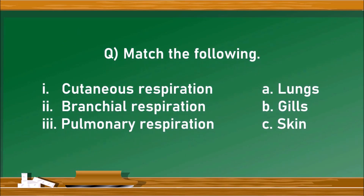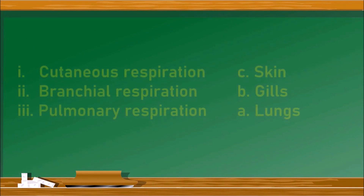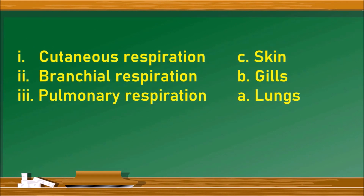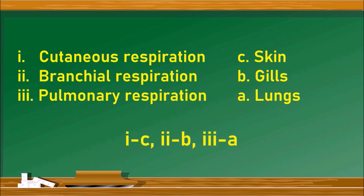Match the following: cutaneous respiration, branchial respiration, and pulmonary respiration are matched with lungs, gills, and skin. Cutaneous respiration occurs through the skin, branchial respiration involves the gills, and pulmonary respiration occurs through the lungs. The matching is: cutaneous → skin (C), branchial → gills (B), pulmonary → lungs (A).